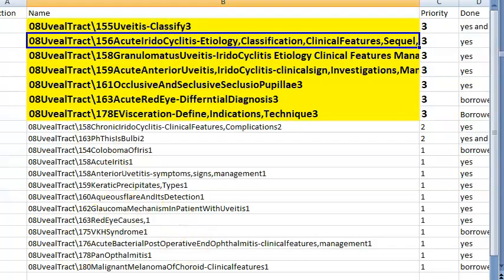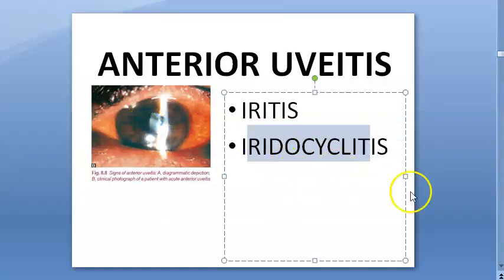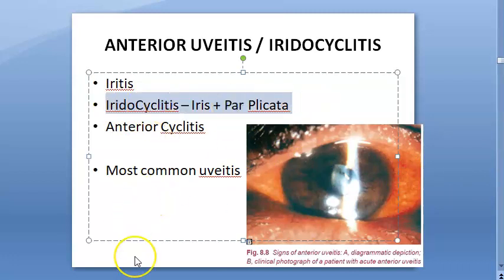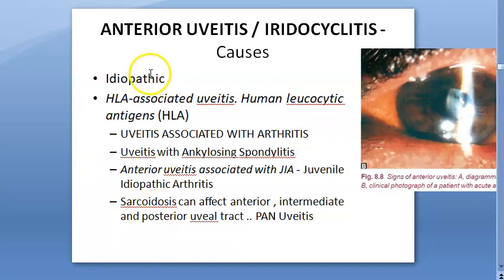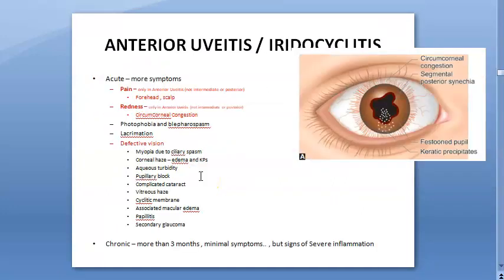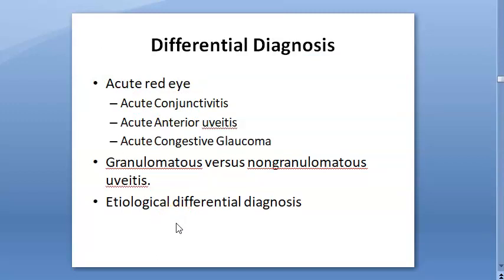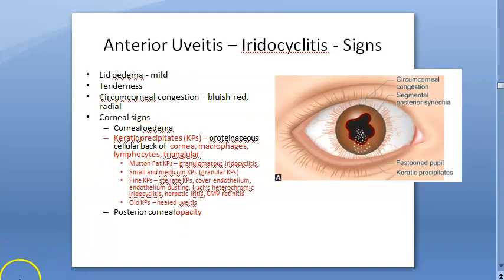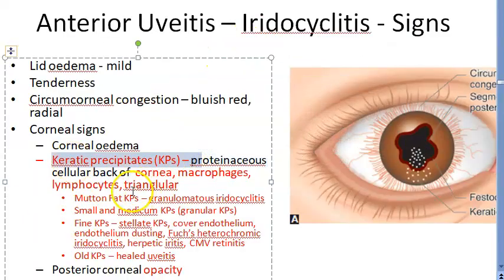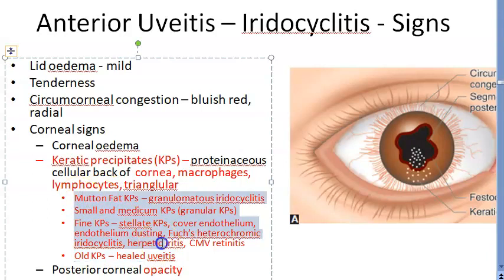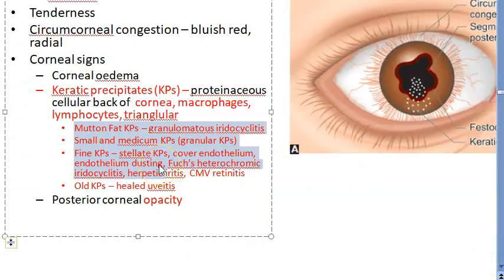Acute iridocyclitis (anterior uveitis) involves the iris and ciliary body. It can be idiopathic or HLA-associated. Symptoms: pain, redness, defective vision, lacrimation, photophobia. Key sign: keratic precipitates (KPs). Types of KPs: mutton fat KPs (granulomatous iridocyclitis), small and medium KPs, fine KPs, and old KPs — remember these four types.